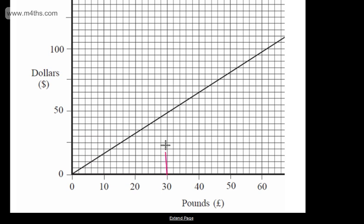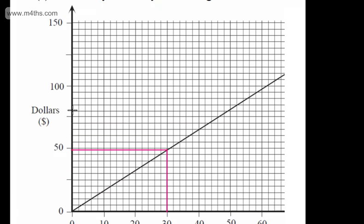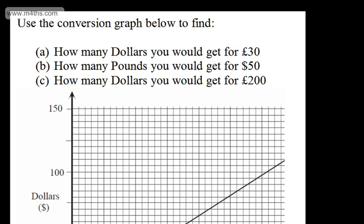So we locate £30, come up to the line, and then read across. That looks to be about $49. So £30 is approximately $49.